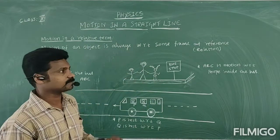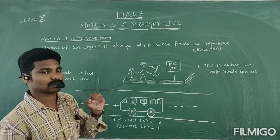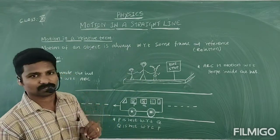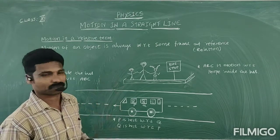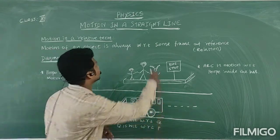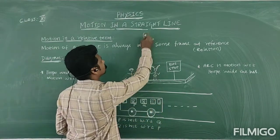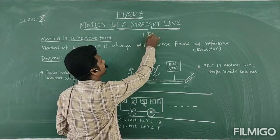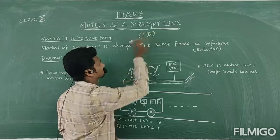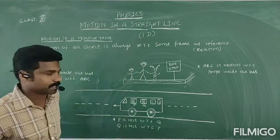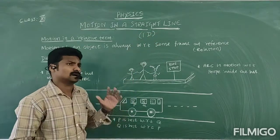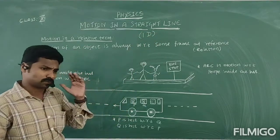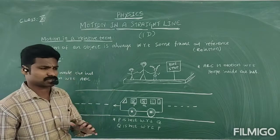So the next level is motion in a straight line, which is simply called one-dimensional motion. This is one-dimensional motion.